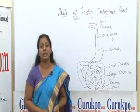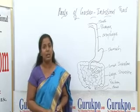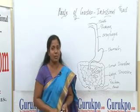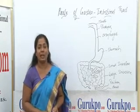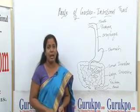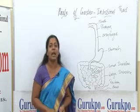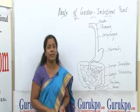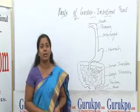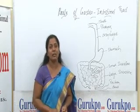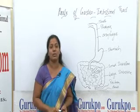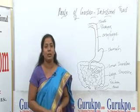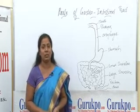The rectum is a 13 centimeter dilated portion where waste material gets stored. The anus is the part where excretion takes place, that is, waste materials pass out through the anus.